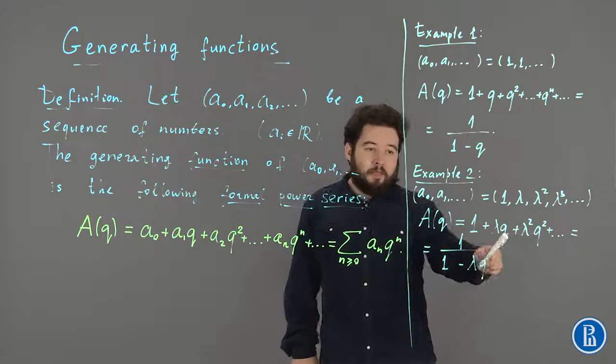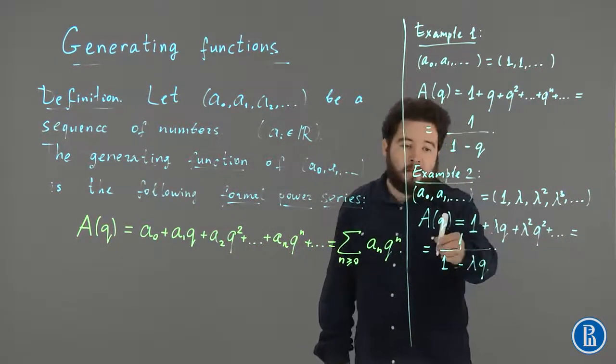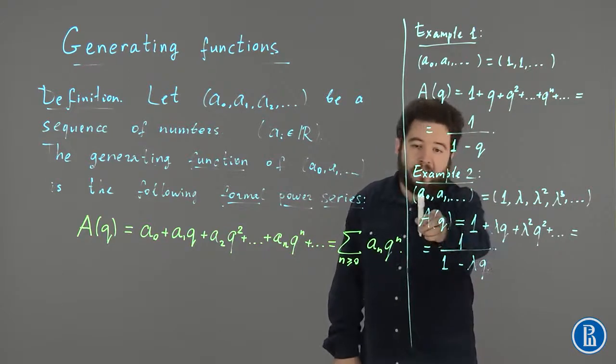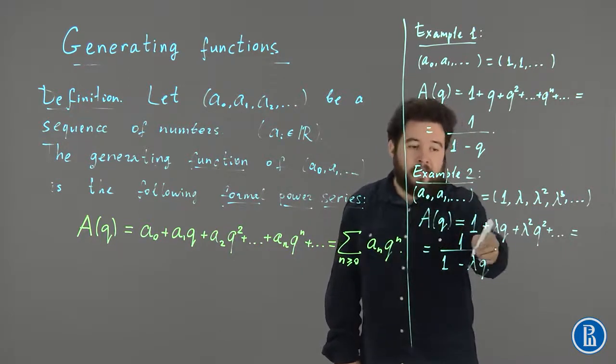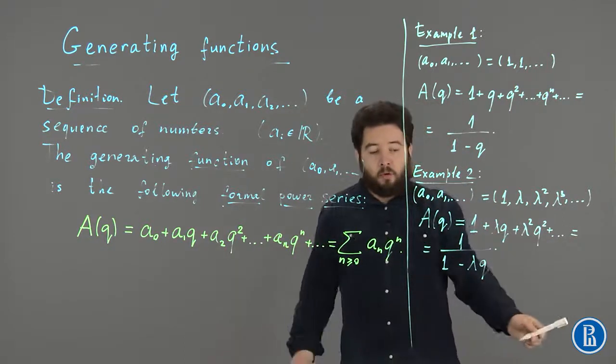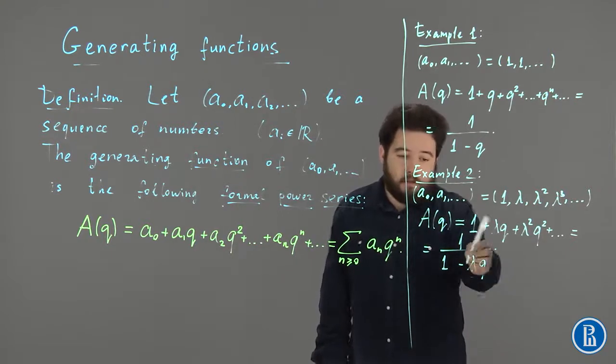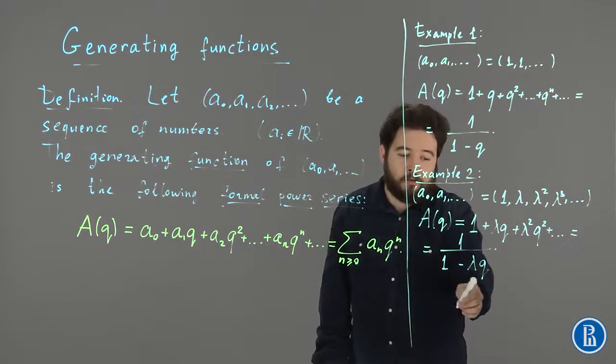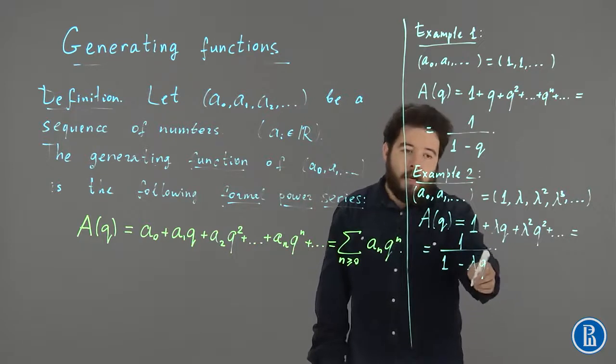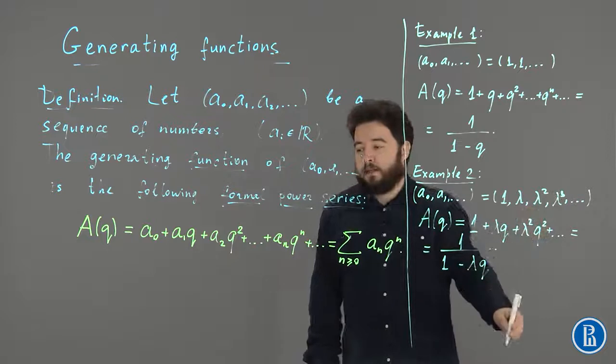So, this expression keeps track of this sequence. So, the sequence A0, A1, etc. is just a sequence of coefficients of this expression. Or, if you wish, you can take the series expansion of this guy here, and its coefficients are equal to A0, A1, and A2, etc.